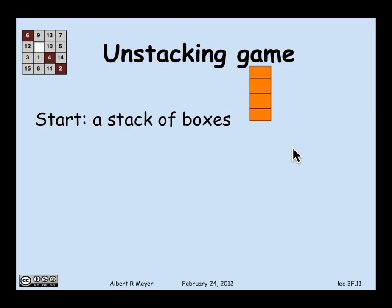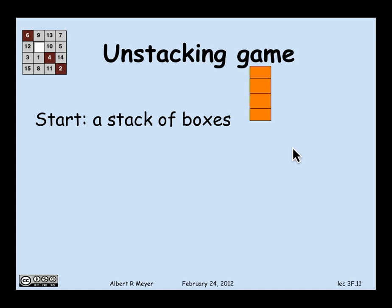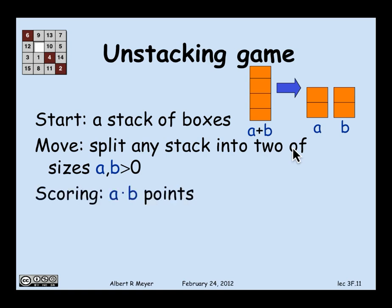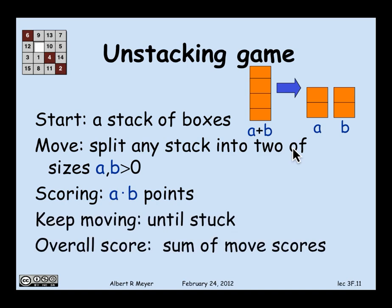All right, let's look at another example. This is a game that we used to play in class. You start off with a stack of blocks, say 10 blocks. And you're allowed to make a move that consists of splitting the stack into two smaller stacks. So if the stack has height A+B, you can split it into a stack of height A and a stack of height B. And you get a score for that move. The score is A times B. And then you keep doing that until you can't make any more moves. That is, when all you have left are stacks of height 1, which you can't split anymore. And then your overall score is the total that you got for all the moves that you made until that point.